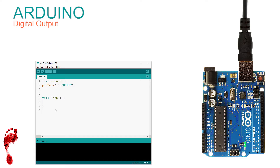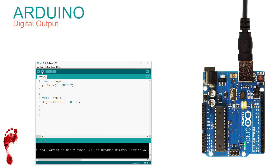On to the loop function — the command is digitalWrite(13, HIGH). There's a pattern emerging: the command is in camel case and the pin is in parentheses with the digital output value. Let's compile the sketch, upload, and run it — watch the LED go high. Now let's turn the LED off: digitalWrite(13, LOW). Press the button again and upload — off goes the LED.